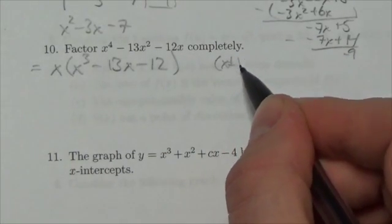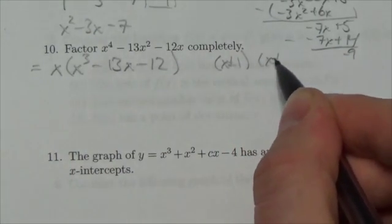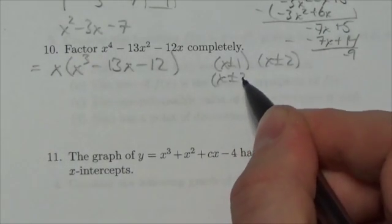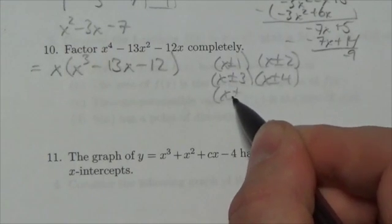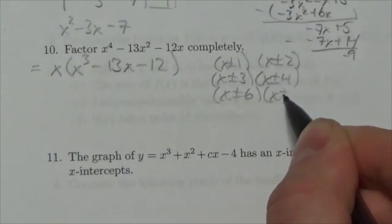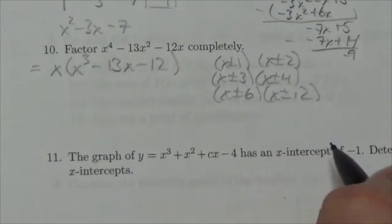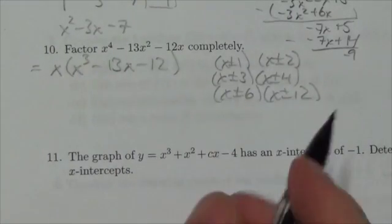It could be x ± 1 as a factor, it could be x ± 2 as a factor, x ± 3, x ± 4, x ± 6, x ± 12. I've got a bunch of options there. They're all factors of the 12 here.